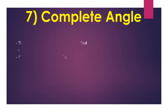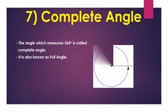Complete angle. The angle which measures 360 degrees is called a complete angle. It is also known as a full angle. The figure shows the angle of 360 degrees, so it is called a complete angle.